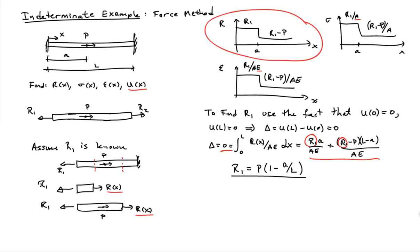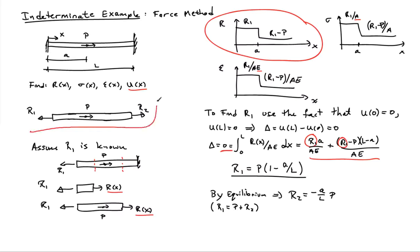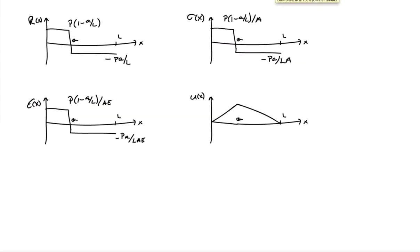Going through that exercise, R1 = P(1 − A/L). Then by equilibrium from the overall free body diagram — R1 = P + R2 — we find R2 = −(A/L)P. Plugging these back in, the internal force graph starts positive, then jumps negative. The stress and strain graphs have the same shape: stress is R/A and strain is σ/E.